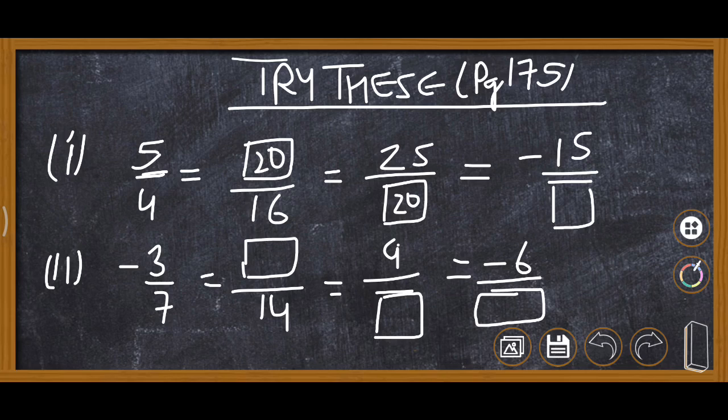So next question, minus 3 upon 7 to 7 to the 14, and minus 3 to the minus 6. Then minus 3 and 9 to minus 3 into minus 3, then it is 9. Seven into minus 3, then it is minus 21.